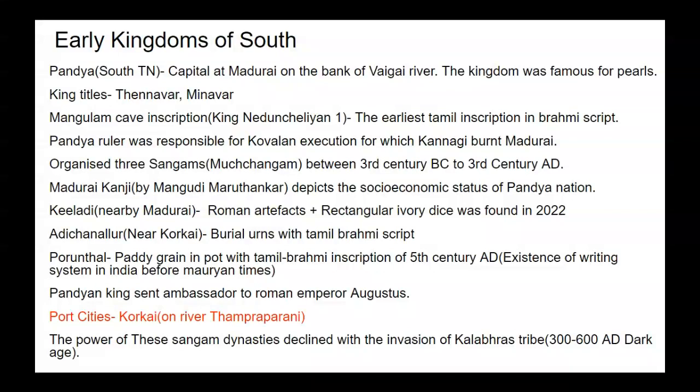The Pandya King sent an ambassador to Roman Emperor Augustus. The port city of the Pandya King was Korkai, on the river Tamra Parani. The power of this Sangam dynasty declined with the invasion of the Kalabhar. They ruled from 300 to 600 AD in South India. At that time no literature or historical evidence was formed, so this period is known as the Dark Age of South India.